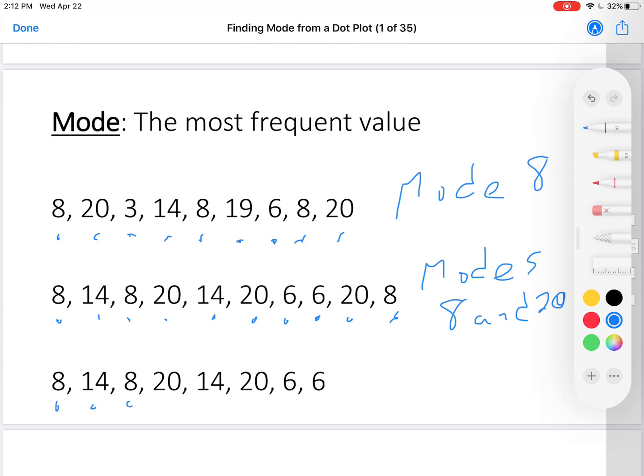This third example: 8, 14, 8, 20, 14, 20, 6, 6. Everything here occurs 2 times. Nothing has any more frequency than anything else. This set of data has no mode.